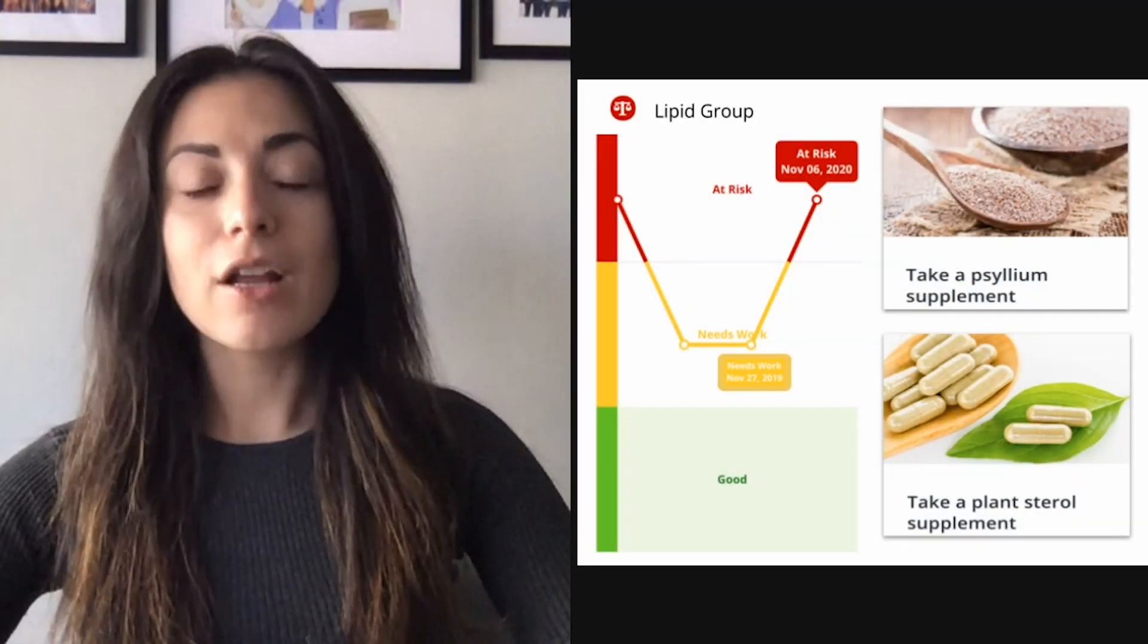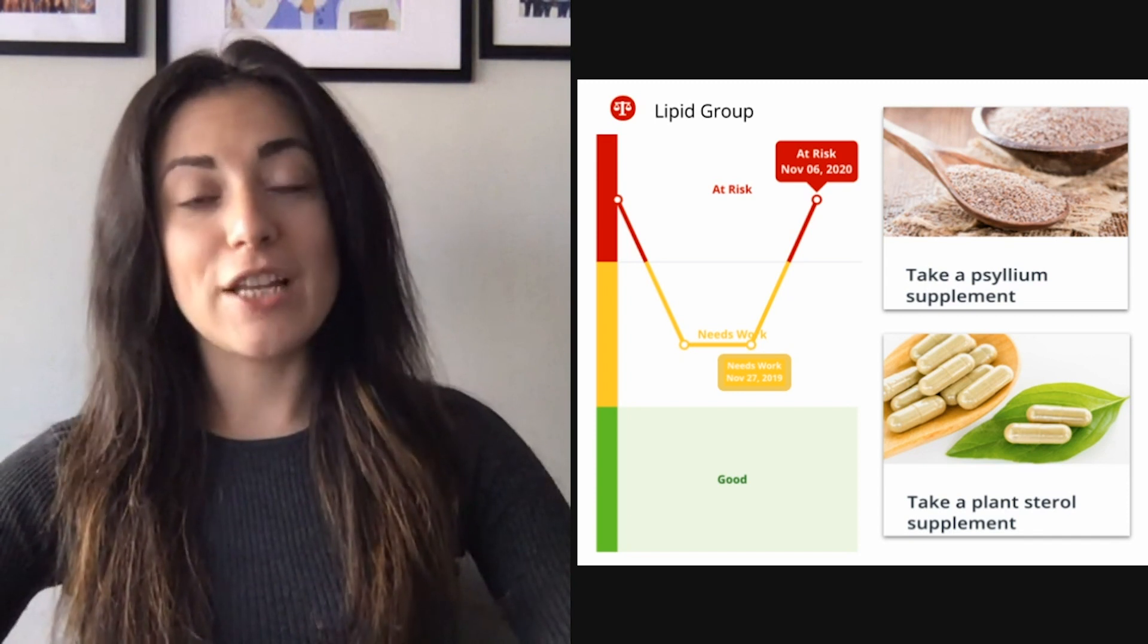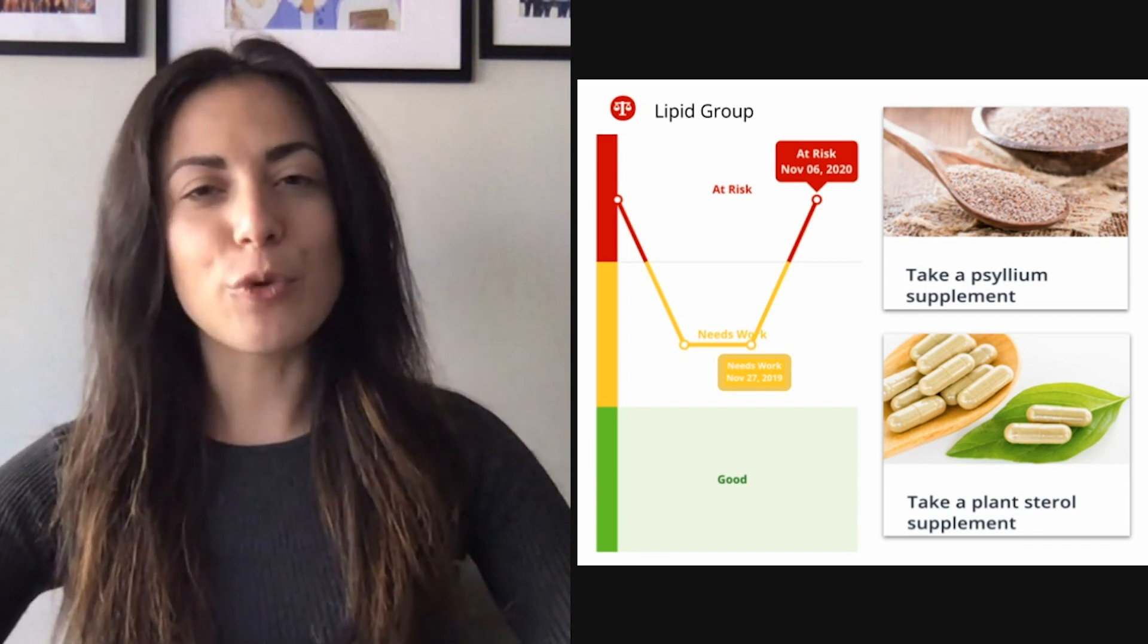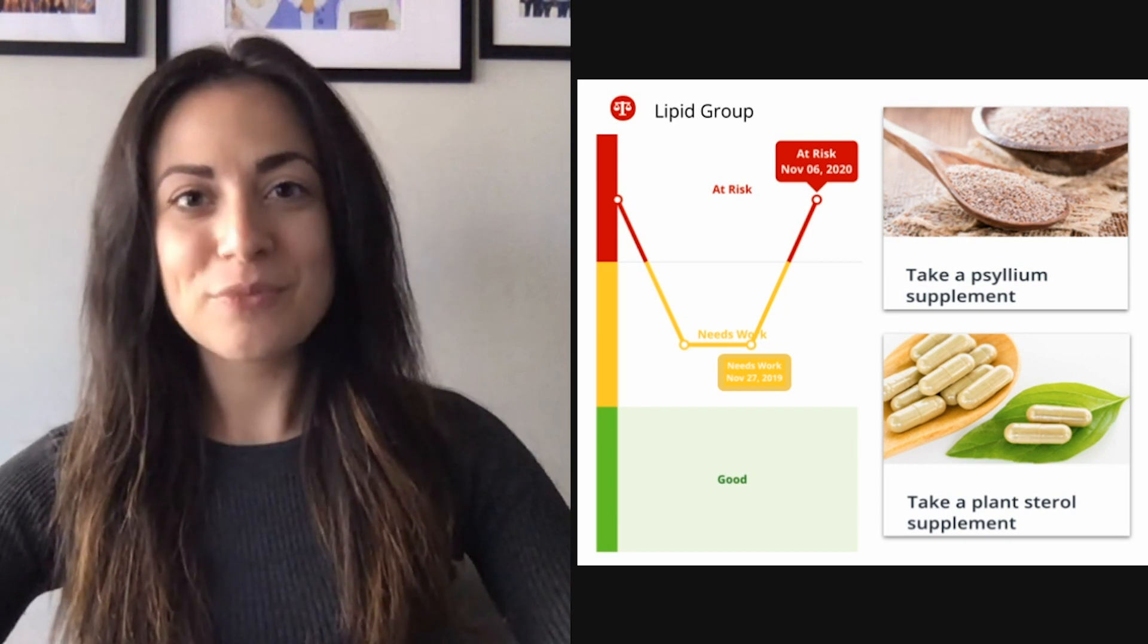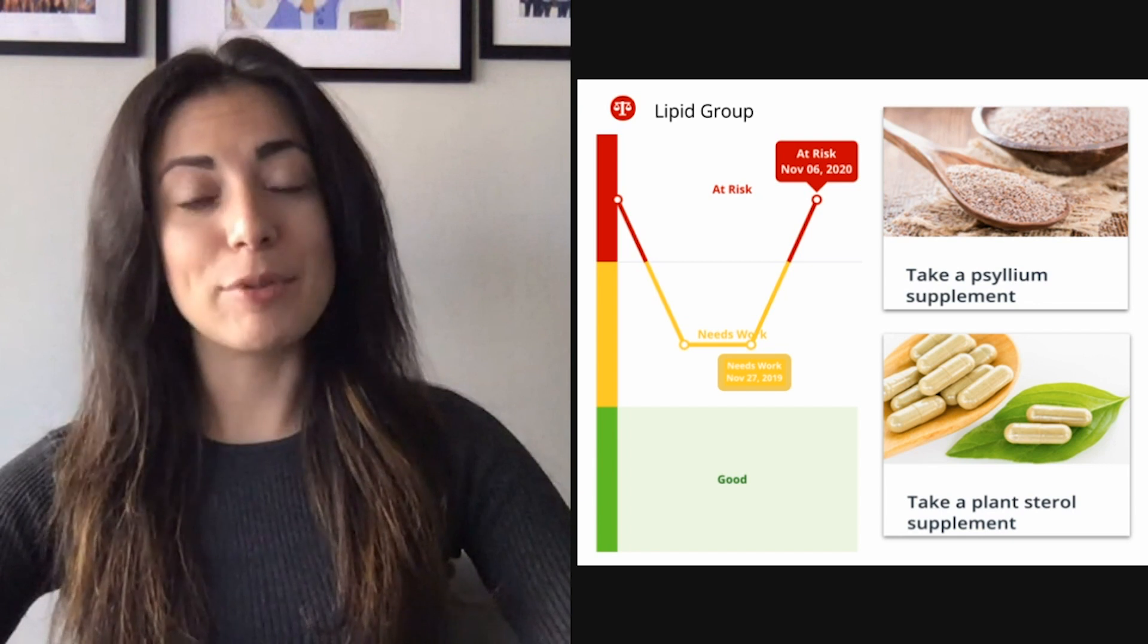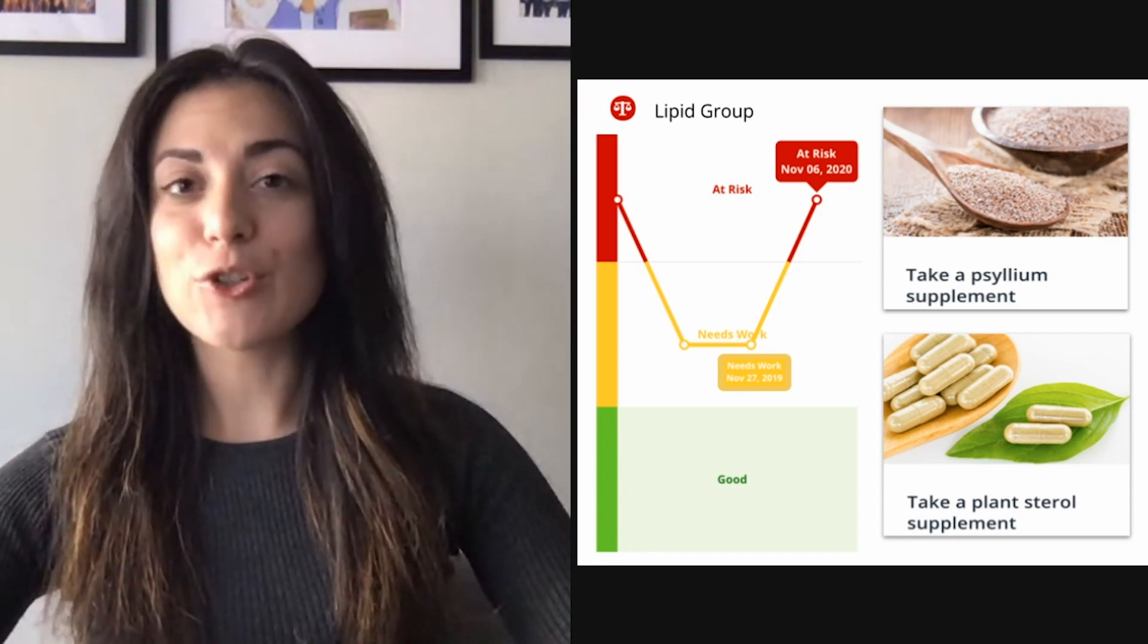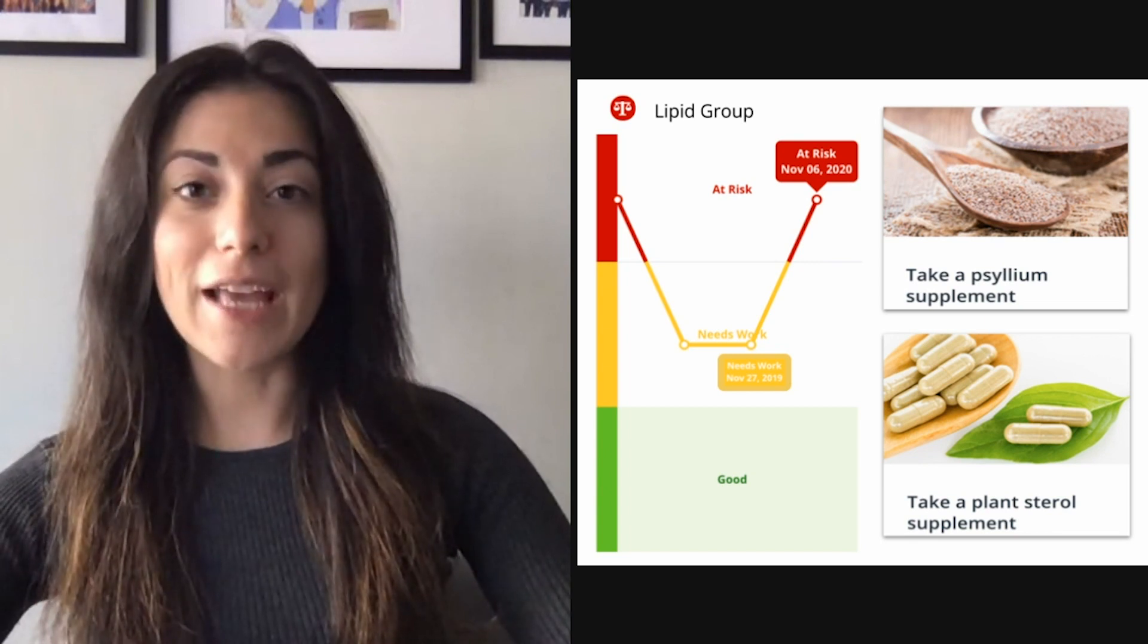The first result that I was most surprised about is my lipid group results. As a vegetarian of over 10 years, I thought that my lipid levels were the one thing that I had under control. But when I first came to Insight Tracker, I found out that I have pretty high lipid levels. This is because I'm genetically predisposed to having high lipid levels, so I need to work even harder to make sure I get those optimized.